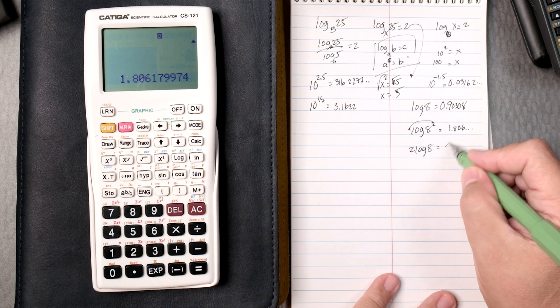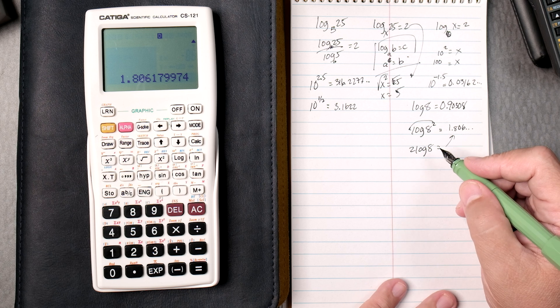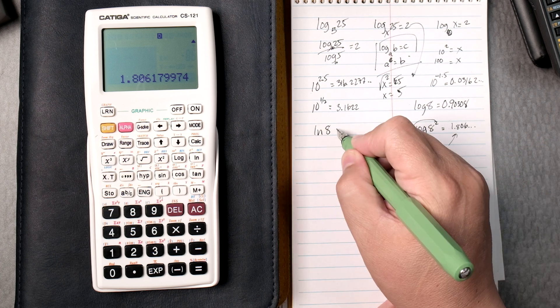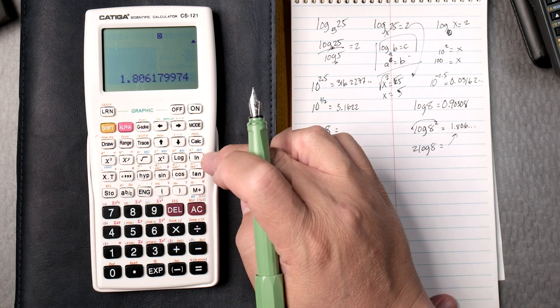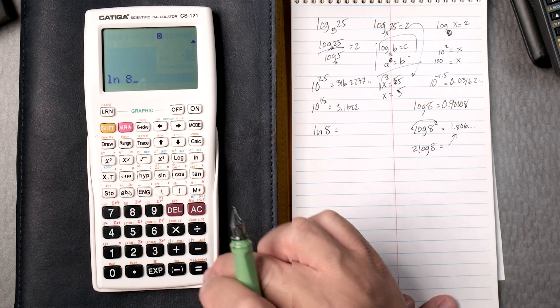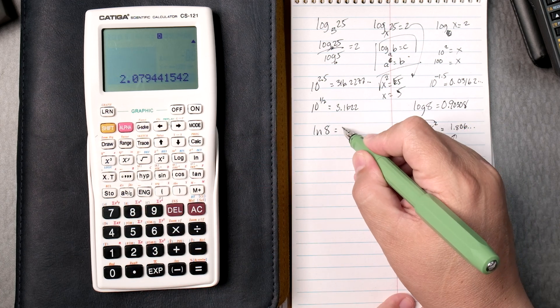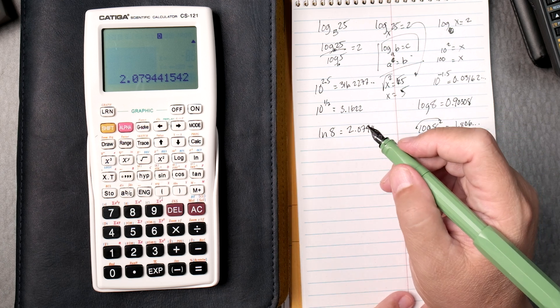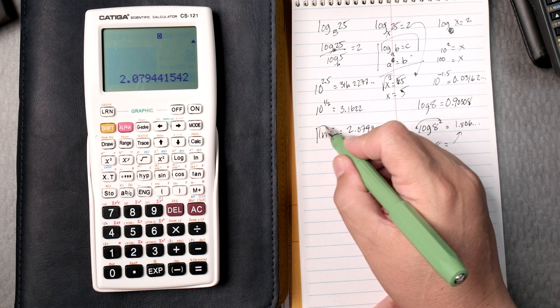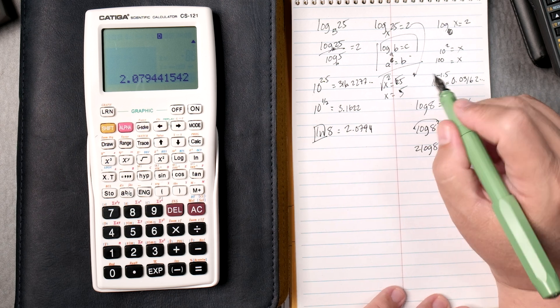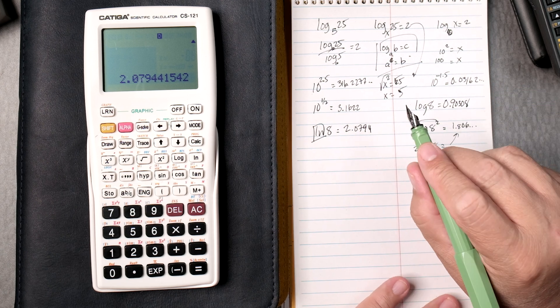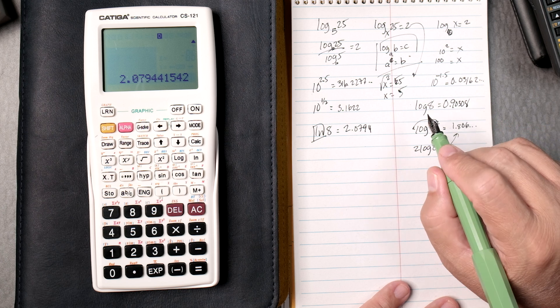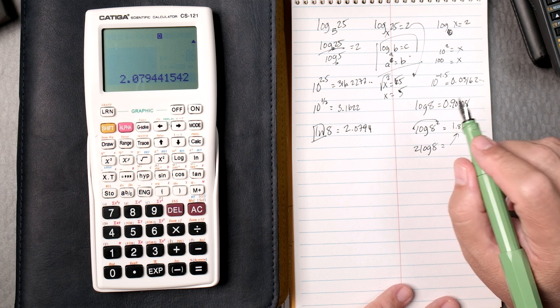All right, how about the natural log of 8? Natural log is right here, 8 equals. That's easy, 2.0794. Natural log, by the way, if it's going a little too fast, by all means pause it and then rewind and watch it. It takes a little time to do it.